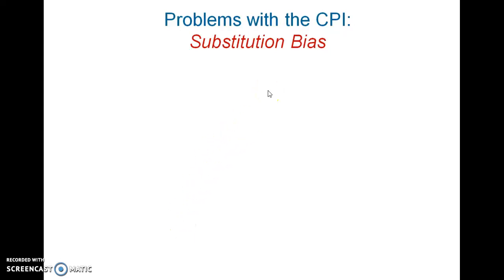Alright, so there's three problems with the CPI. All three problems overstate the real cost of living, so it makes it look like it's more expensive to live than it is in reality. And if you overstate the cost of living, you are also going to overstate the amount of inflation in the economy. So let's go through these three problems real quick.